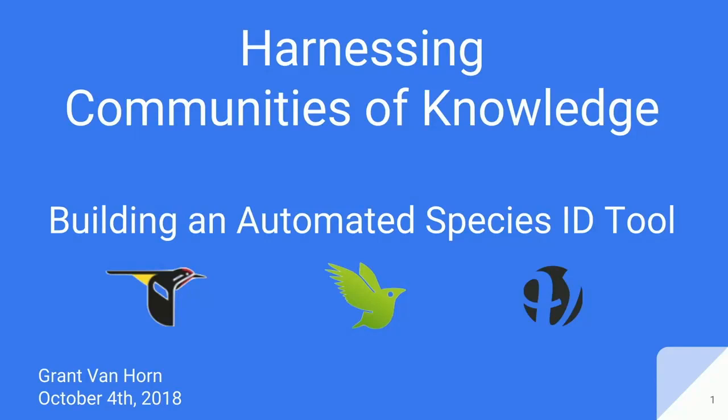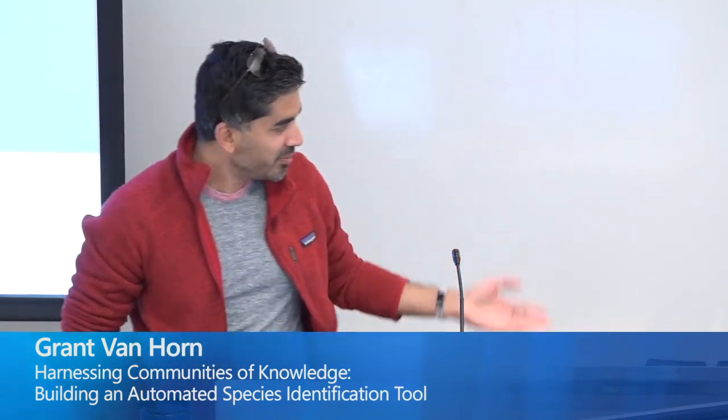Welcome to Grant Van Horn, who is finishing up his PhD at Caltech with Pietro Perona. Before that, he did his masters and undergrad at UCSD working with Serge Belongie. Grant has done a lot of work on fine-grained classification, particularly around species recognition, and has been working with the iNaturalist organization.